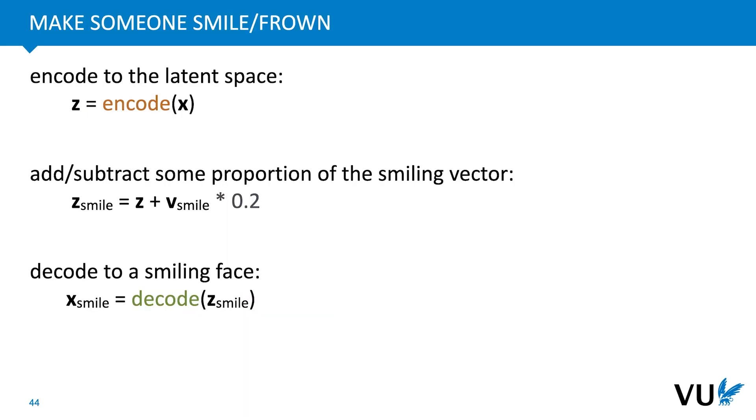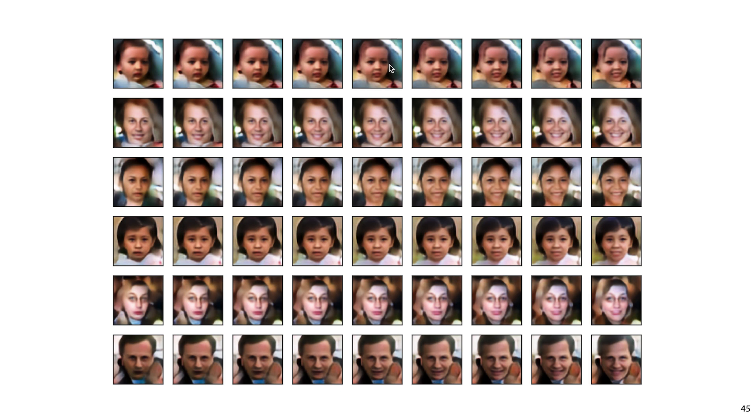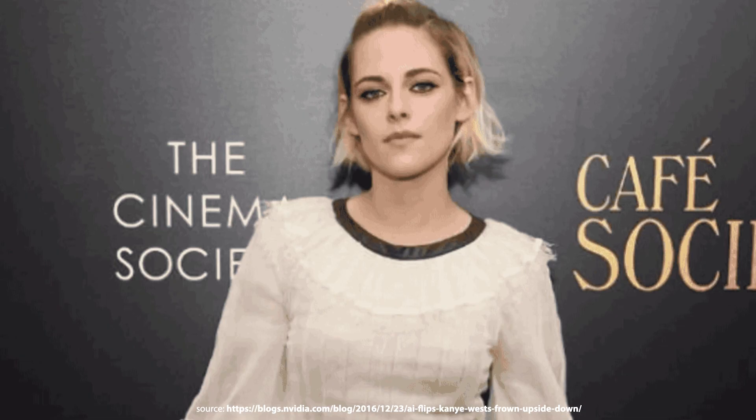Once we've worked out what the smiling vector is, we can then manipulate photographs to make people smile. We just encode their picture to the latent space. We add the smiling vector times a small scalar to control the effect. And then we decode the manipulated latent representation. If the autoencoder understands smiling well enough, the result will be the same picture, but manipulated so that the person will smile. In the middle, we have the decoding of the original data. And to the right, we see what happens if we add an increasingly large multiple of the smiling vector. To the left, we subtract the vector, which makes the person frown or increases the extent to which they frown. With a bit more powerful model and a little face detection, we can see what some famously moody celebrities might look like if they smiled.